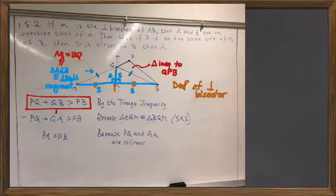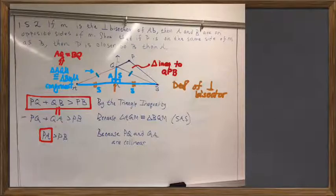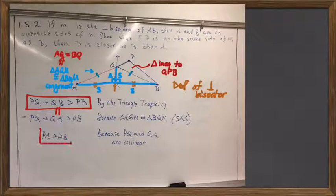But because QB and QA were the same by our isosceles result, that means PB is less than the sum of PQ and QA. But the sum of PQ and QA is the same as PA, because Q lies on the segment between P and A. And so, in the end, we were able to prove that PA was greater than PB. So P is closer to B than it is to A.